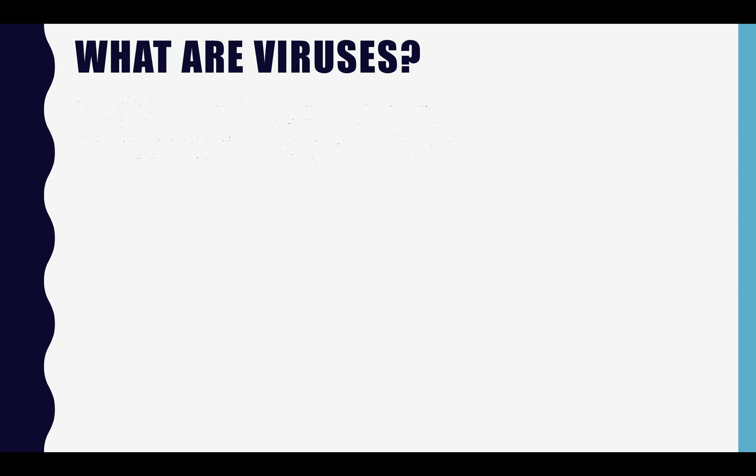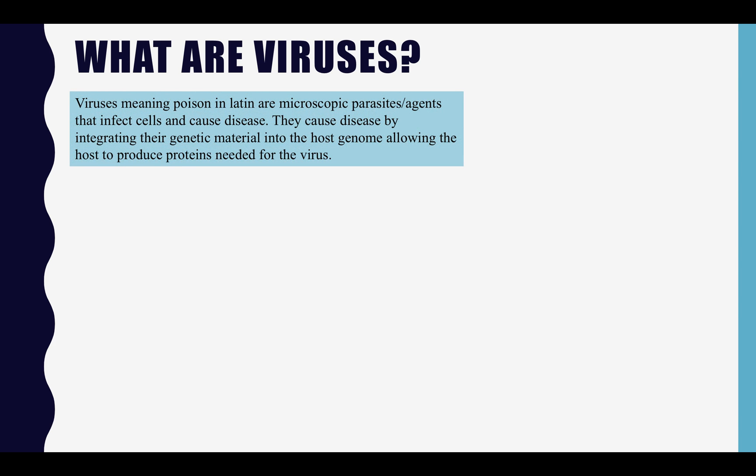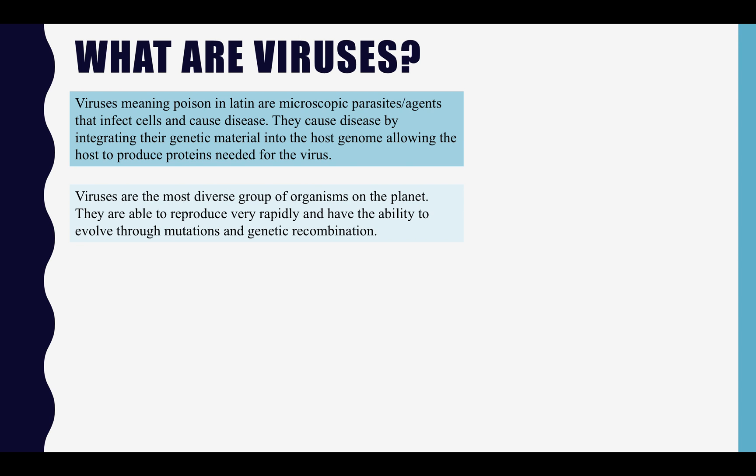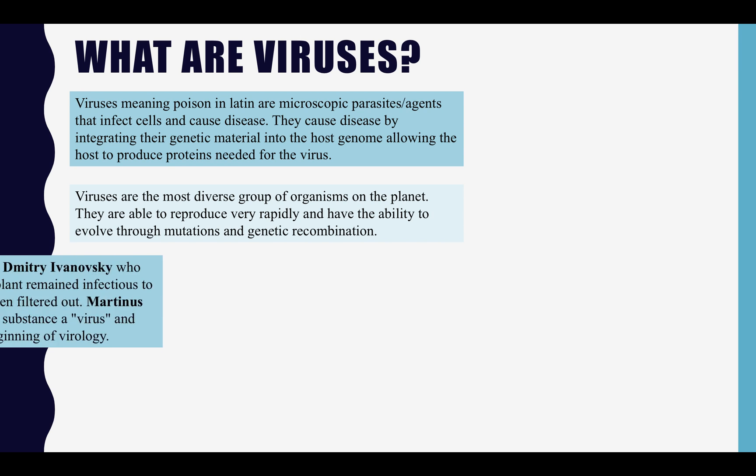So firstly, what are viruses? Viruses, meaning poison in Latin, are microscopic parasites and agents that infect cells and cause disease. They cause disease by integrating their genetic material into the host genome, allowing the host to produce the proteins needed for the virus. Viruses are the most diverse group of organisms on the planet. They are able to reproduce very rapidly and have the ability to evolve through mutations and genetic recombination.